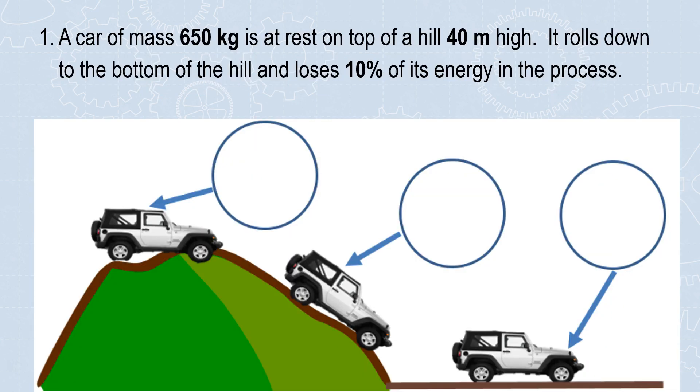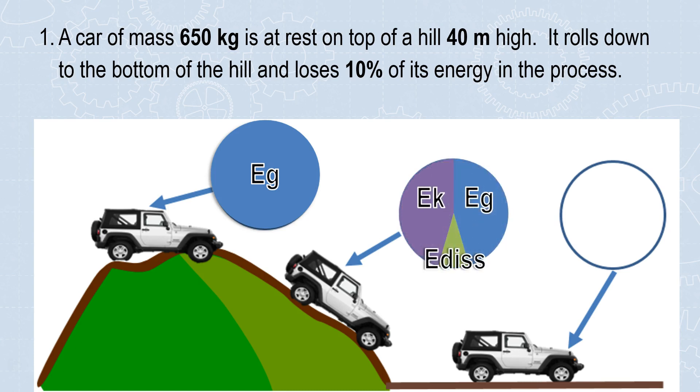Here we have a car mass 650 kilograms at rest on top of a hill 40 meters high. It rolls down to the bottom of the hill and loses 10% of its energy in the process. That means at the top, it's not moving, it's just off the ground, all EG. Halfway to the ground, it has gravity because it's off the ground, it has kinetic because it's moving, but it's also started to dissipate. So we have a lot of gravity, a lot of kinetic, and a little edis. At the bottom, it's moving but it's lost or dissipated 10% of its energy. So we're looking at mostly kinetic but a little edis. It's slower than it would have been if it was a frictionless hill.